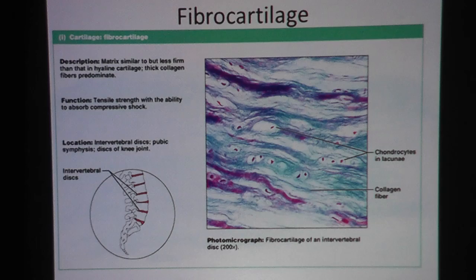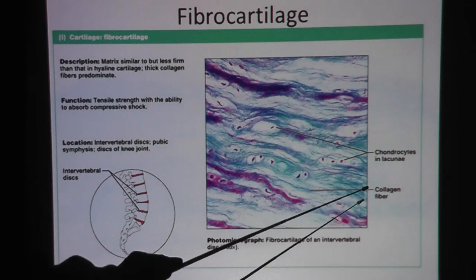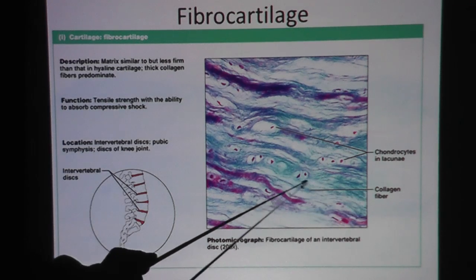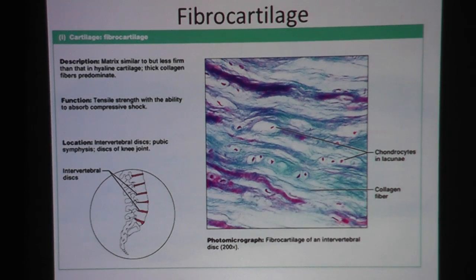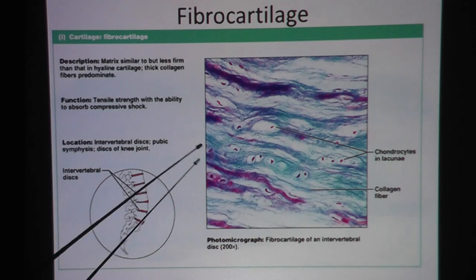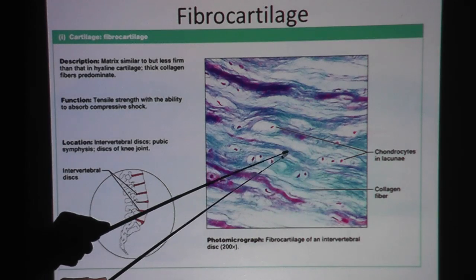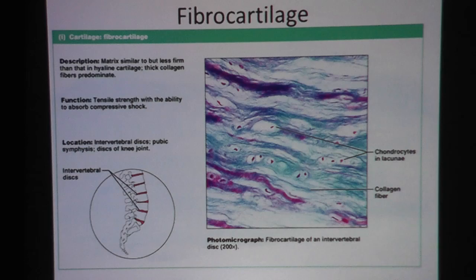Right off the bat, the word "fibro" should clue you in that there's a lot of fiber. What kind of fiber specifically? Collagen fibers. And if you remember, in areolar or loose connective tissue, collagen fiber has a wavy look. So if you look at the slide, you see some waviness here outside the cell in the matrix.